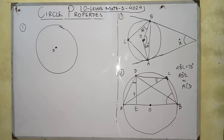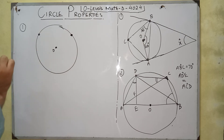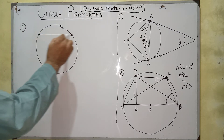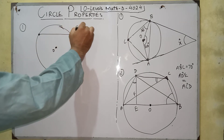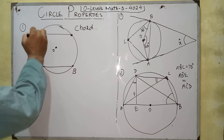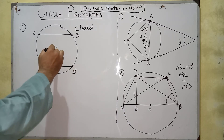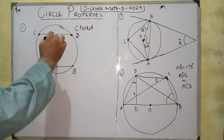The first property is about two equal chords. A straight line which joins two points on the circumference of a circle is called a chord. This is chord AB and this is another chord CD. This property says that if two chords are equal, both chords will be equidistant from the center of the circle — meaning their perpendicular distances from the center will be equal.